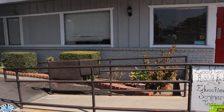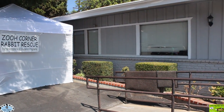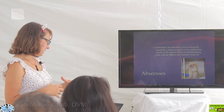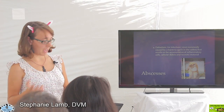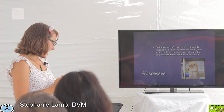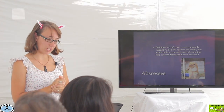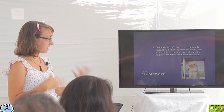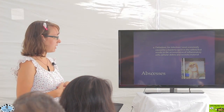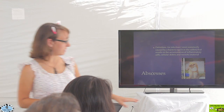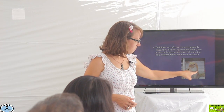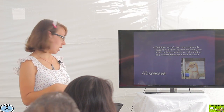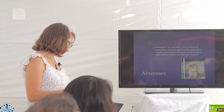Our next topic is abscesses. Abscesses are extremely common in rabbits. So what actually is an abscess? It's an infection, most commonly caused by some sort of bacteria, that results in the accumulation of lots of inflammatory cells. It causes a lot of debris and necrotic material to accumulate in an area. This rabbit here has a nice big abscess on the side of its jaw. We did talk a little bit last time during the dental lecture about jaw abscesses, so we did go over some of this.